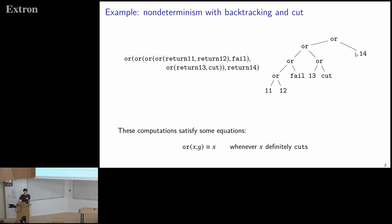There are equations we might want to consider between these computations. For example, if we have X and Y, and we know X will definitely cut, then a choice between X and Y should be the same as just doing X. In an extensional model, we would expect these two computations to be identified.